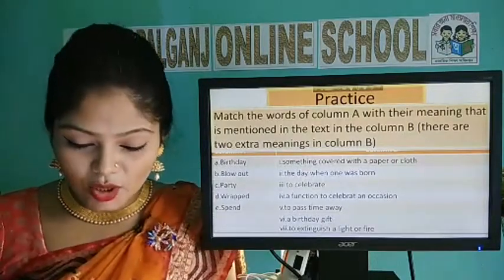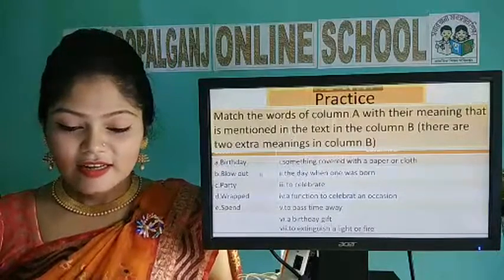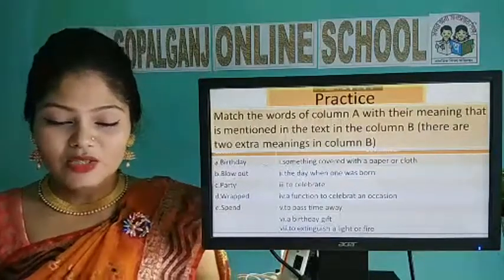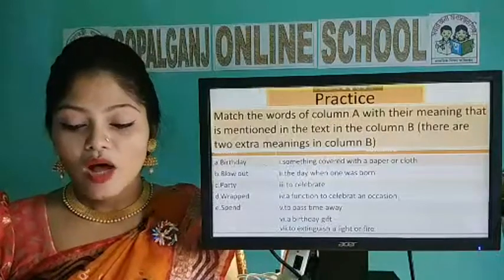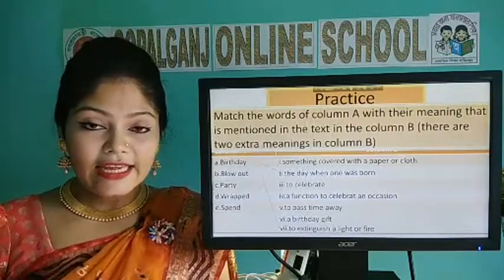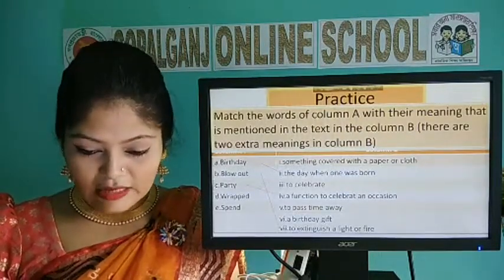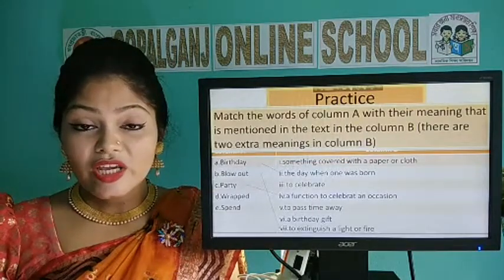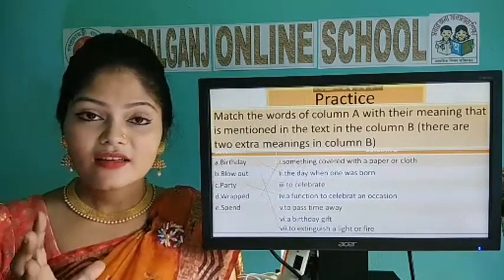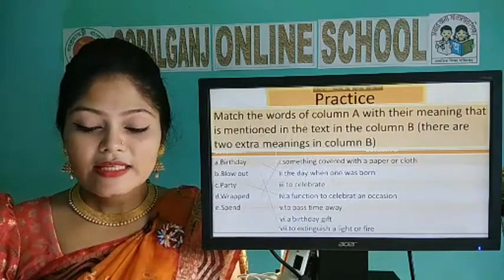Now the answers: A. Birthday means the day when one was born. B. Blow out means to extinguish a light or fire. C. Party means a function to celebrate an occasion. D. Wrapped means something covered with paper or cloth. E. Spent means to pass time away.